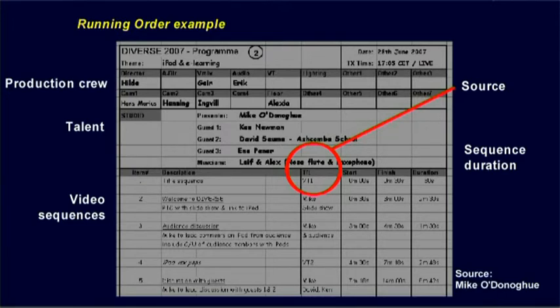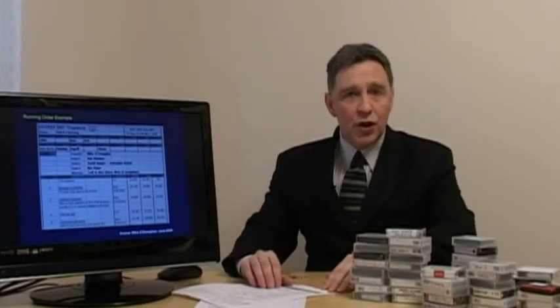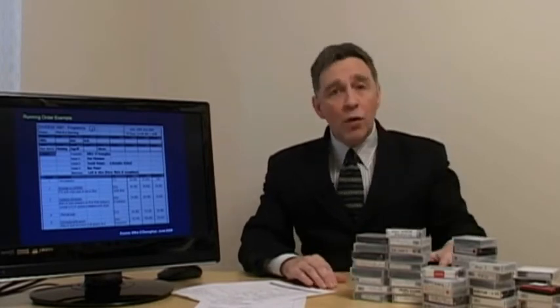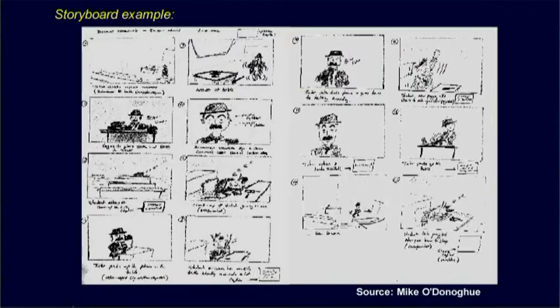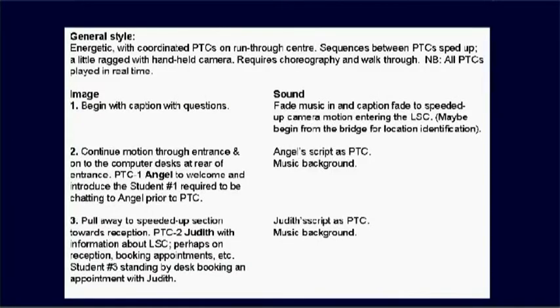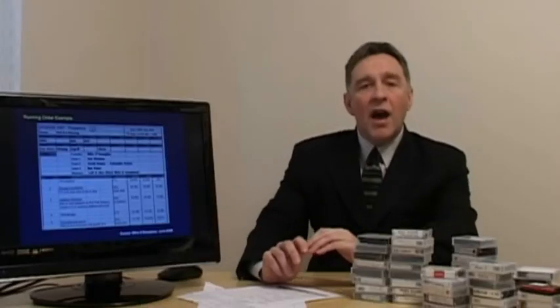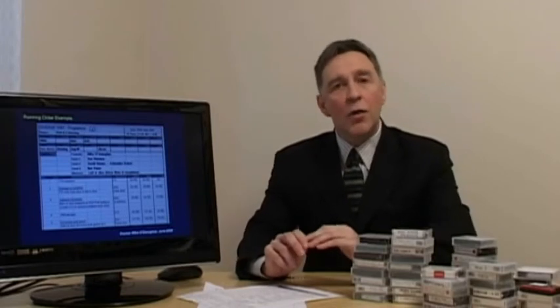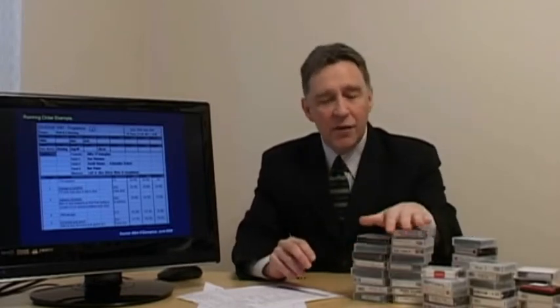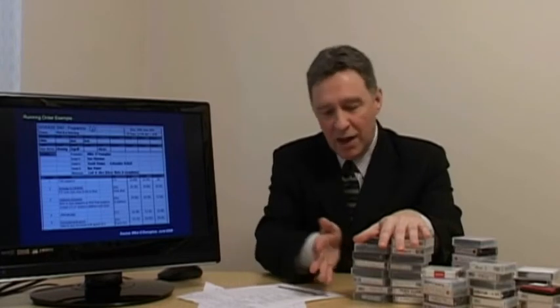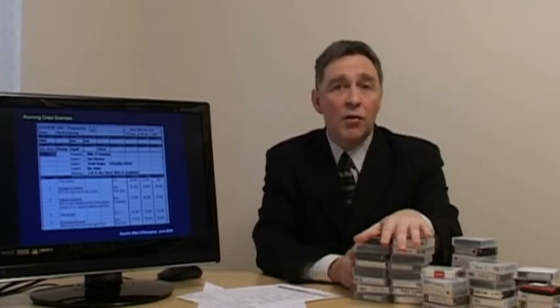So, we now have three different tools that will help us in the treatment of our video production: a running order that will help us if we're making a studio production, a storyboard that will illustrate some of the visuals we may require, and a shot list that gives a description of the image and sound we want to record. It's worthwhile spending time producing a shot list or a storyboard, because ultimately they're going to save us many many hours of time in downloading and wading through random material, and that may not lead us to the video we really want to produce.